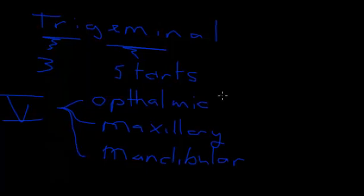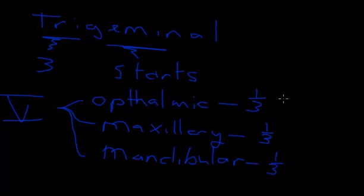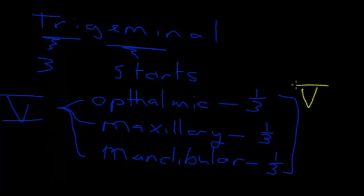These divisions supply basically sensory to the face. If you divide the cranial nerve into its three divisions, the ophthalmic supplies the upper third, the maxillary supplies the middle third, and the mandibular supplies the lower third of the face. For simplicity we refer to these as the three divisions of the trigeminal nerve, written as V1, V2, and V3.